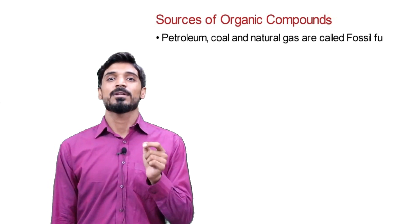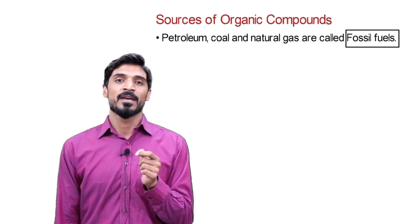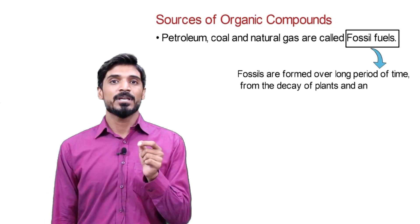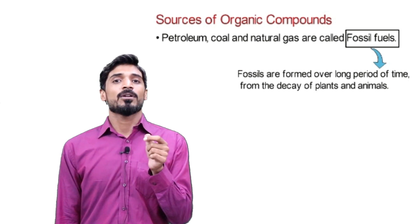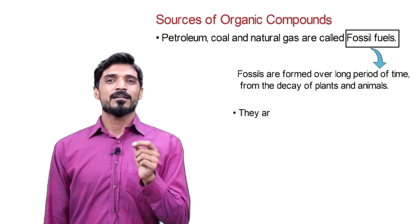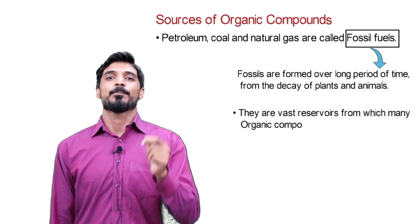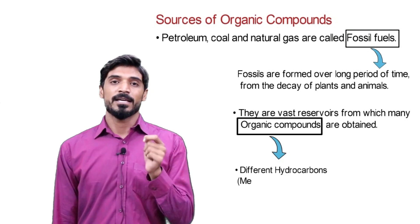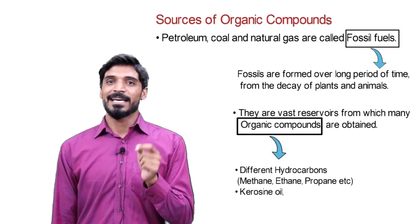These three sources — petroleum, coal, and natural gas — are known as fossil fuels because they are obtained from the dead plants and animals in the depths of the sea over a long period of time due to high pressure and high temperature. They are vast reservoirs from which we can obtain different organic compounds, different hydrocarbons like methane, ethane, propane, kerosene oil, and gasoline.